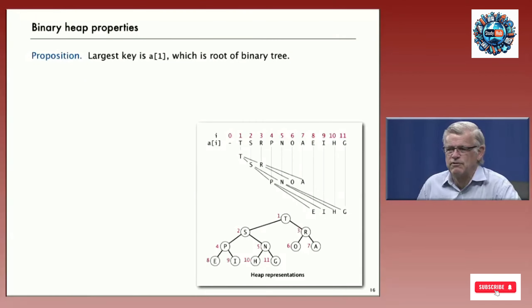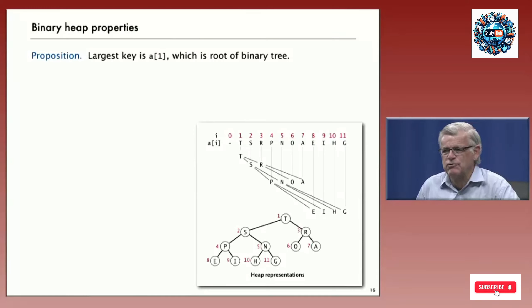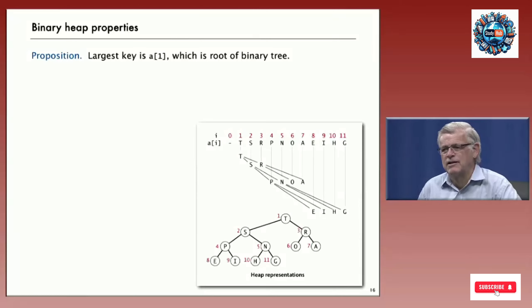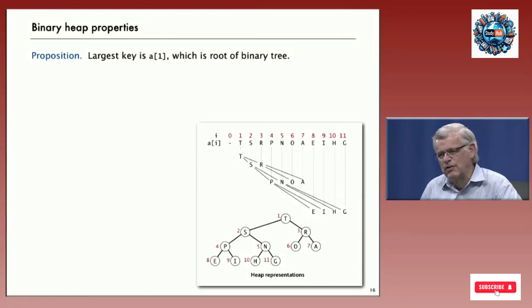Let's look at a few properties of binary heaps — complete binary trees represented in an array with keys in the nodes satisfying the heap order property. First, A[1] is the largest key. It's larger than the keys of its two children, and they're larger than theirs, and so forth, so it's the largest key in the data structure.